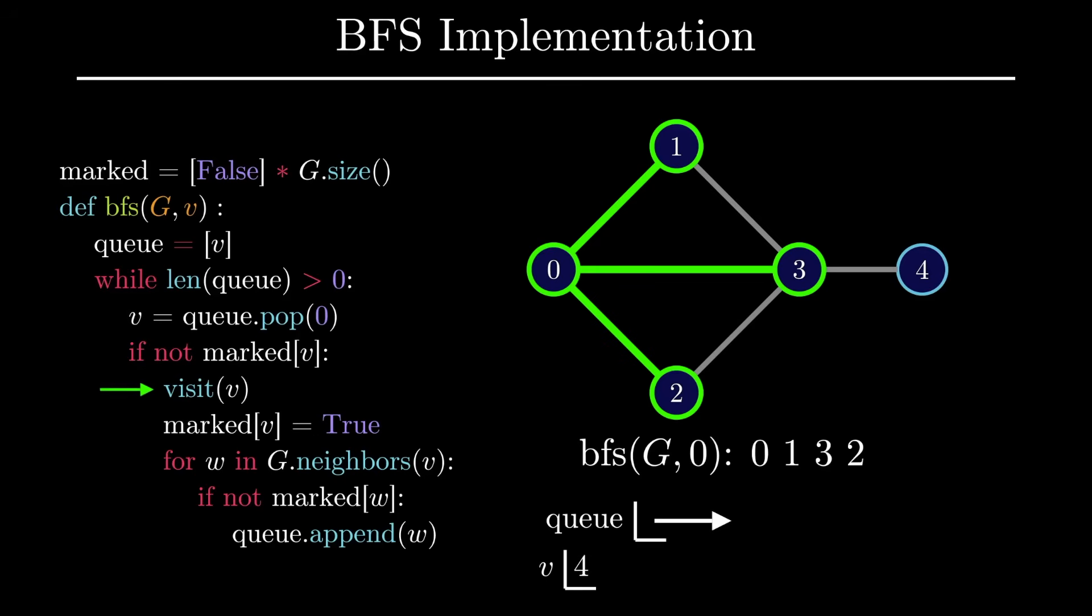This vertex has not been visited before, so we visit and mark the vertex. This vertex is the final vertex in the BFS order, and after this point, the algorithm terminates since all of its neighbors have already been visited, and the queue is now empty.